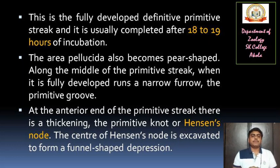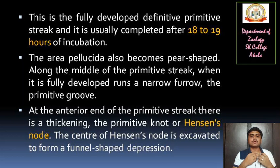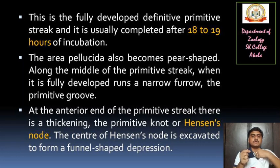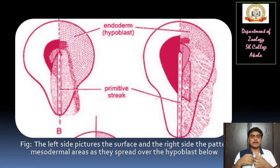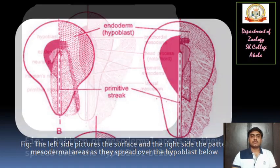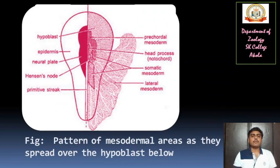The area pellucida also becomes pear-shaped along the middle of the primitive streak. When it is fully developed, a narrow furrow runs through the primitive groove. At the anterior end of the primitive streak there is a thickening called the primitive knot or Hensen's node. The center of Hensen's node is excavated to form a funnel-shaped depression. You are able to see in this diagram the funnel-shaped depression, the surface view on the left side, and on the right side the patterns of the mesodermal areas as they spread over the hypoblast below the surface.